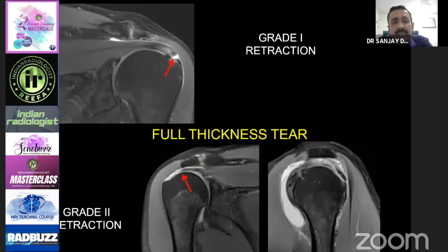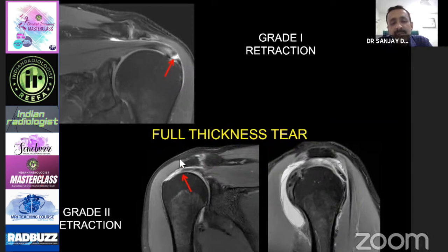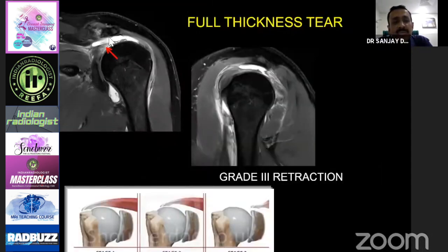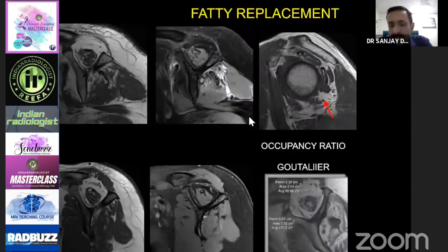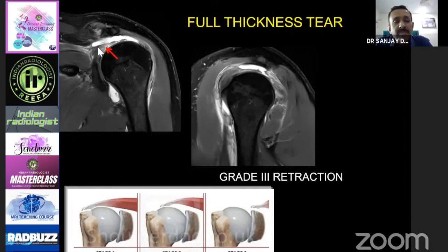When you see tears, whether partial or full thickness, you start identifying retraction. Whenever retraction is less than 10 millimeters it is grade 1. When it goes up to the mid humeral head — above 1.5 to 2.5 centimeters — it is grade 2 retraction. When it reaches the glenohumeral joint or more than 3.5 centimeters it is grade 3. When you see no tendon at all at the mid portion of the humeral head, and it goes beyond the glenohumeral joint, it is grade 4 retraction.